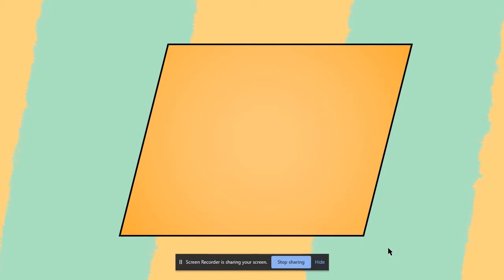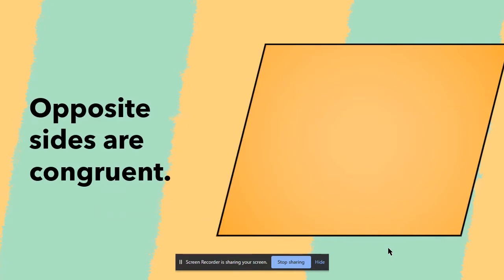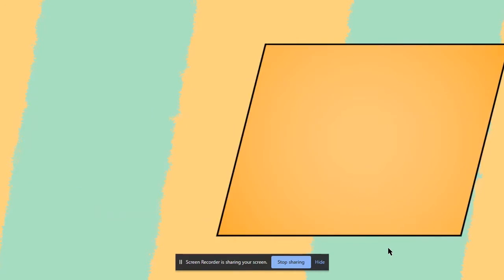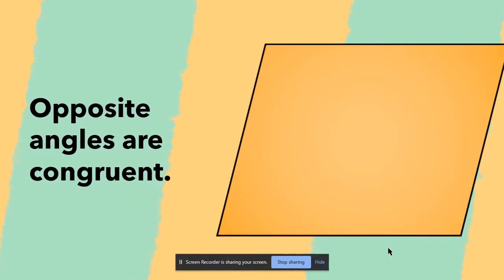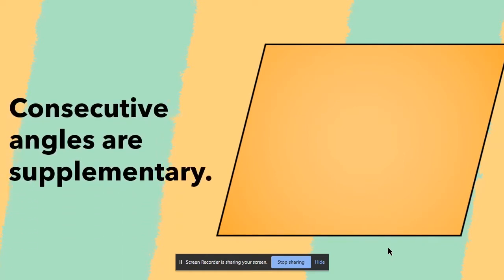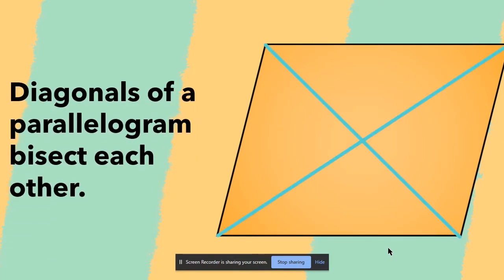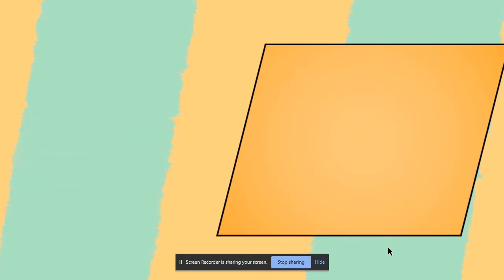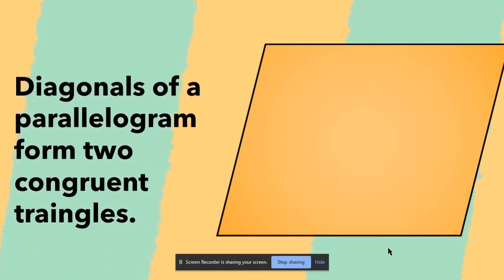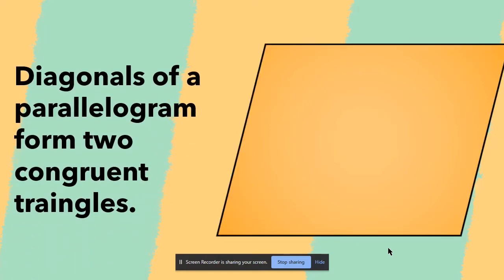There are five unique properties present in a parallelogram. First, any two opposite sides are congruent. Second, any two opposite angles are congruent. Third, two consecutive angles are supplementary, meaning they add up to 180 degrees. Fourth, diagonals of a parallelogram bisect each other, meaning they divide each other equally into two. And last, a diagonal of a parallelogram forms two congruent triangles.